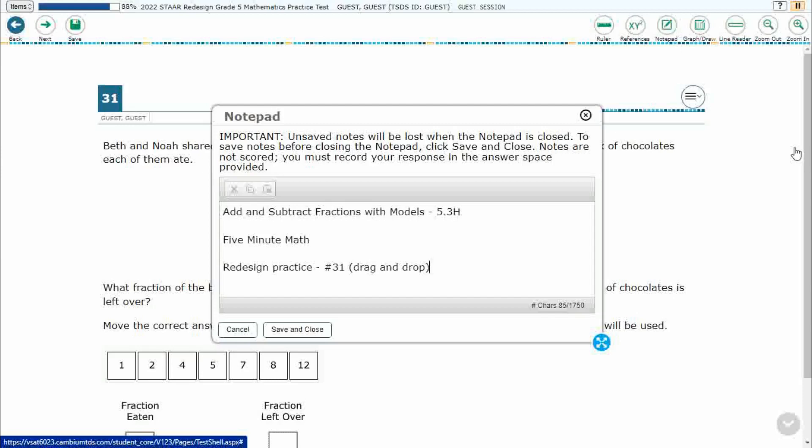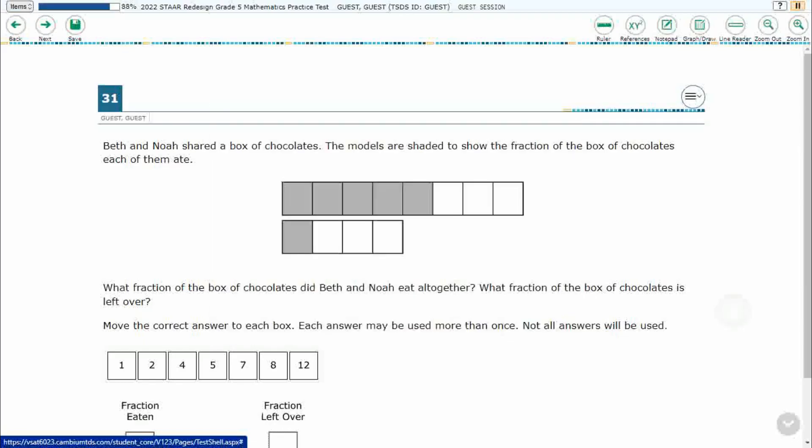Hello and welcome to 5-Minute Math. Today we are looking at the fifth grade concept of adding and subtracting fractions with models. This is standard 5.3H in the great state of Texas and we are using item number 31, which is a new item type drag and drop from the redesigned practice online STAAR test.